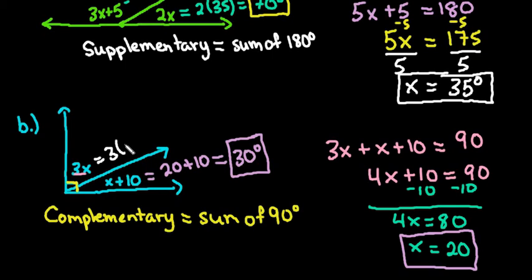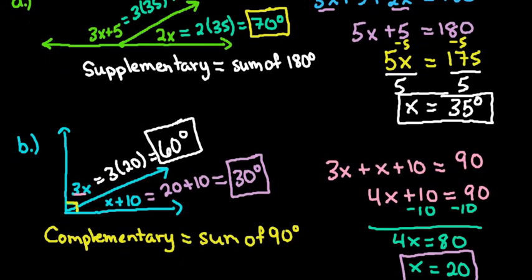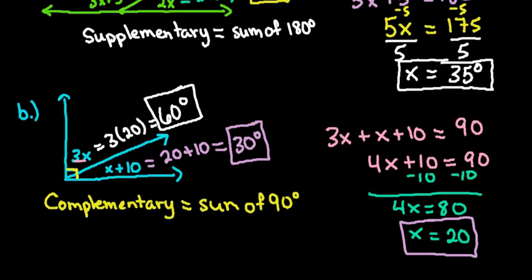Either way, I'm going to end up with 60 degrees. So the measure of our first angle is 30 degrees. The measure of our second angle is 60 degrees. So just to recap, if you are finding supplementary angles, the sum is going to be 180. If you are finding complementary angles, the sum is going to be 90.